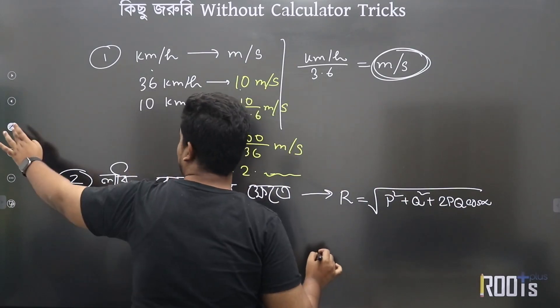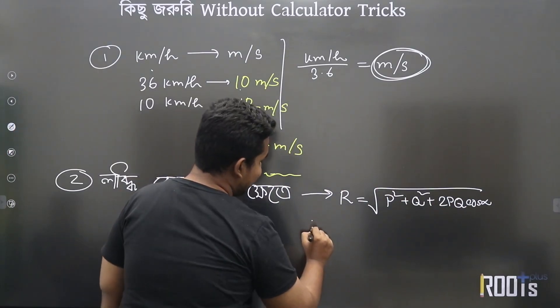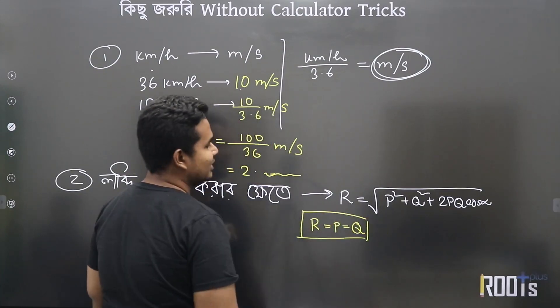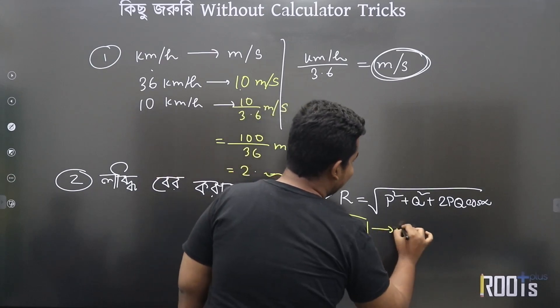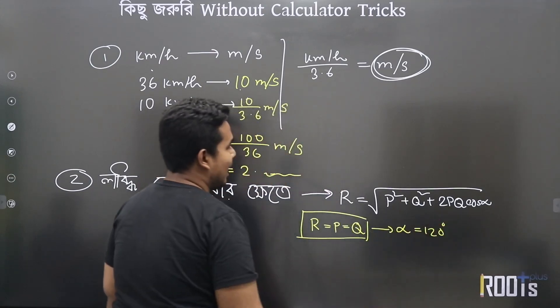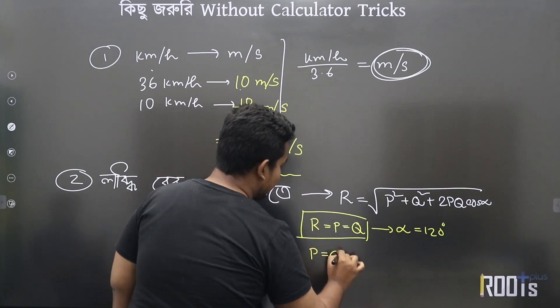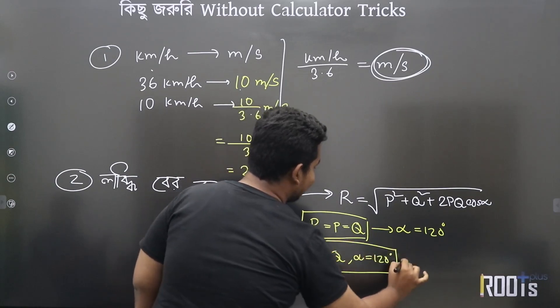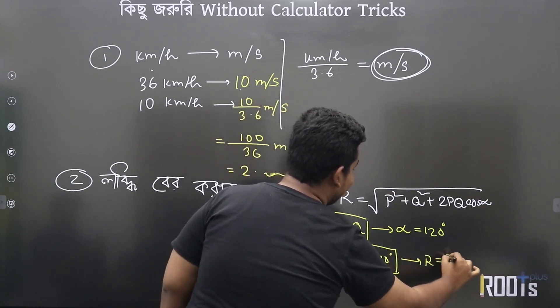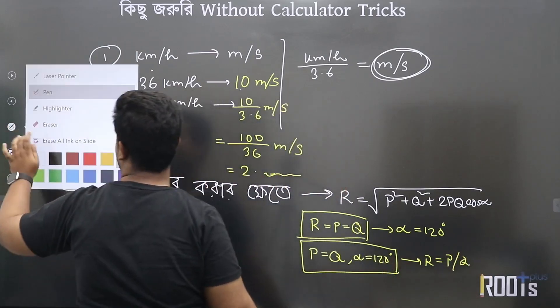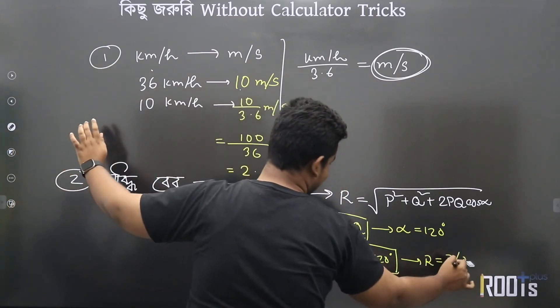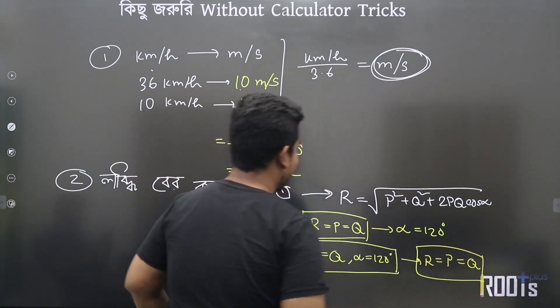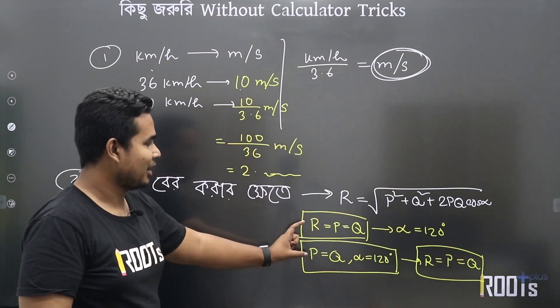If you remember, if someone gives you three values - if p, q, and one more are given, and if they're equal, then your alpha value will be 120 degrees. Okay? In this case, you can say that if p and q are equal, and alpha is 120 degrees, then the resultant r will equal p or q. That is, r equals p equals q. Okay?